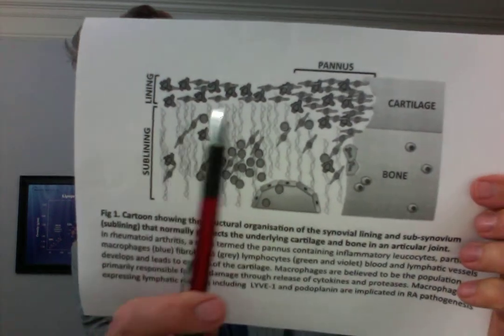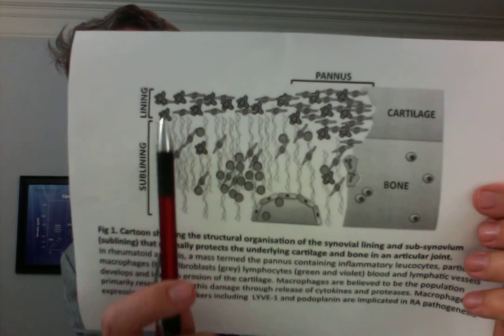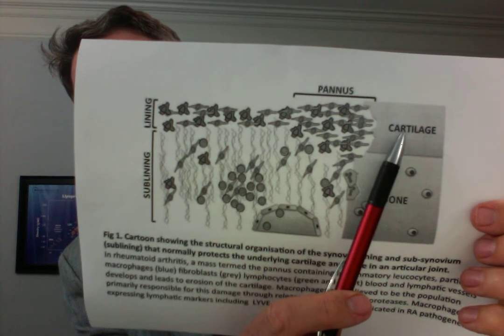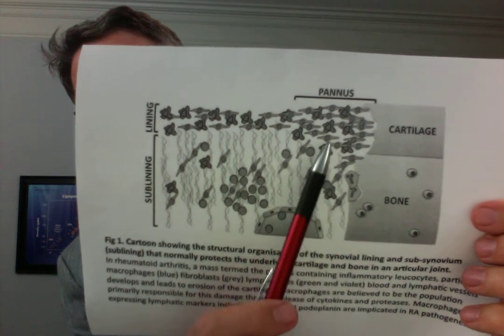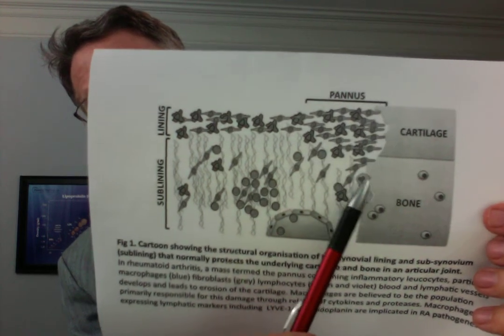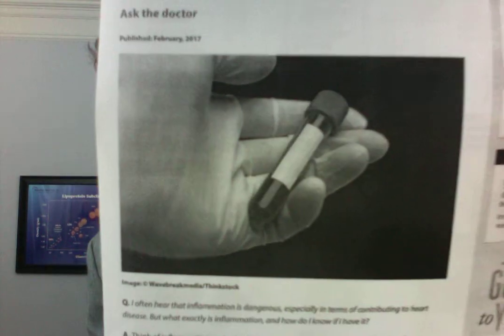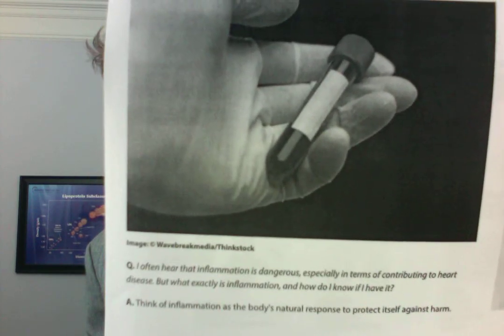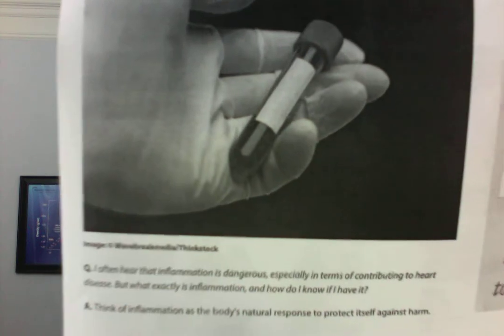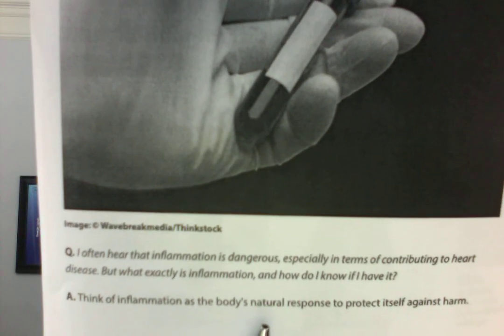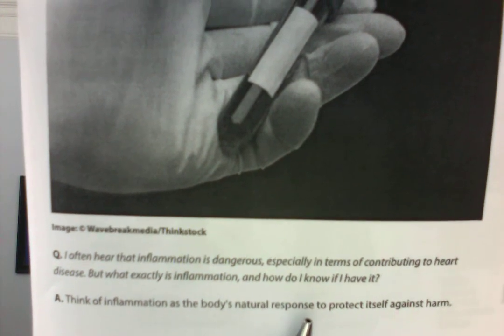This is a representation of the cells and the inflammatory process in rheumatoid arthritis. Here's the cartilage and here's the bone — both are being attacked by inflammatory cells: T cells, monocytes, and other cells where the immune system is attacking the body. As the Harvard Health newsletter basically states, inflammation is the body's natural response to protect itself — in other words, the immune system is attacking something.